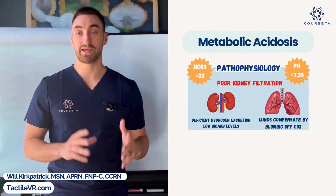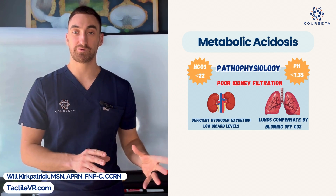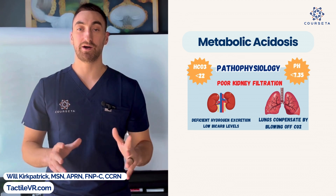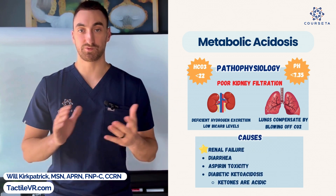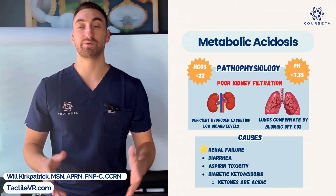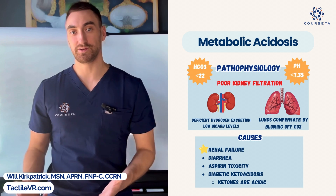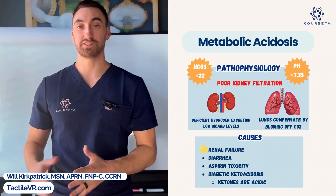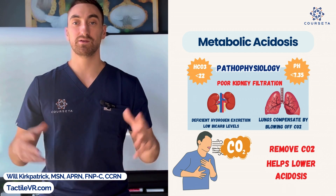Now let's talk about metabolic acidosis. Metabolic acidosis is defined by a pH below 7.35 and a bicarb level also below 22. The pathophysiology is associated with deficient excretion of hydrogen ions from the kidneys. Common causes include renal failure or renal injury, diarrhea, aspirin toxicity, and diabetic ketoacidosis. Since it's the kidneys' fault this time, the lungs compensate by increasing the respiration rate to expel more CO2 and balance the body.